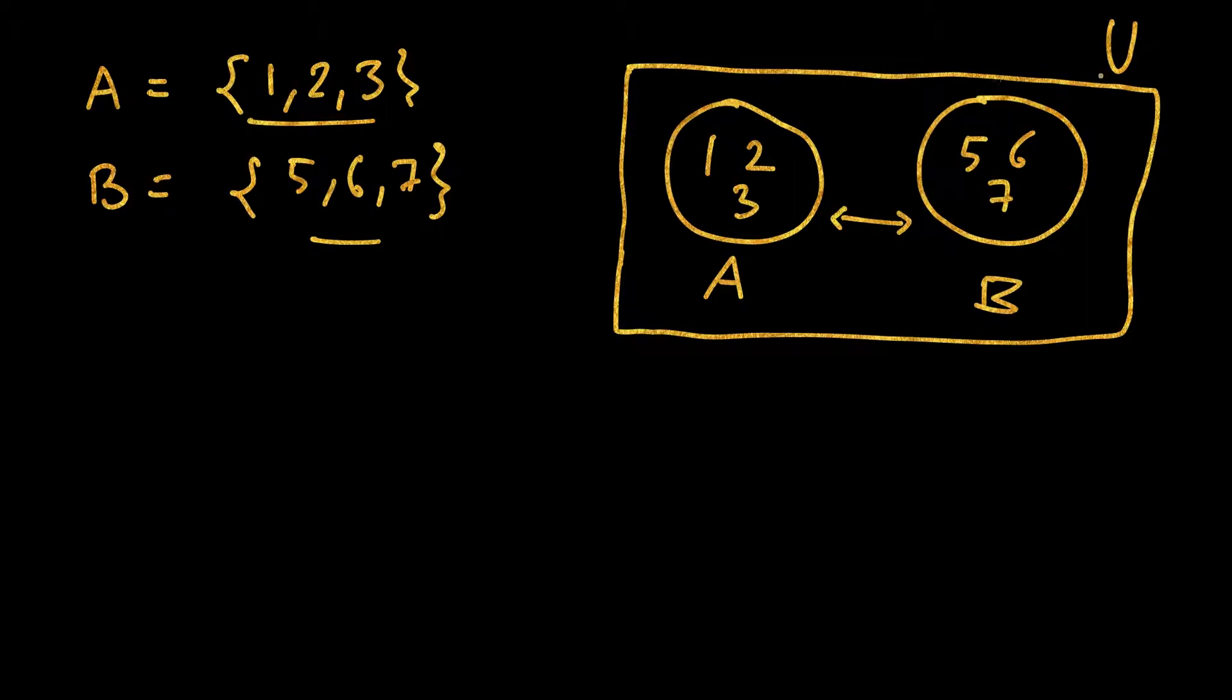Now let's take another example, and this time we will have some common elements. Let's say we have one set P equals {1, 2, 3, 4}, and set Q has {3, 4, 8, 9}. We see that 3 and 4 are common to both of these.